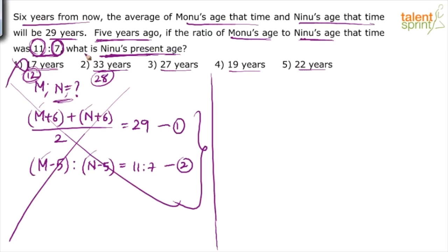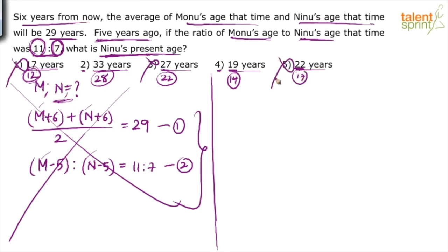We still need to check the remaining options. Option 3: present age 27, five years ago 22 — is 22 a multiple of 7? No — eliminated. Option 4: present age 19, five years ago 14 — is 14 a multiple of 7? Yes — option 4 is also possible. Option 5: present age 22, five years ago 17 — is 17 a multiple of 7? No — eliminated. So within about 10 seconds, three wrong options are eliminated, leaving options 2 and 4.